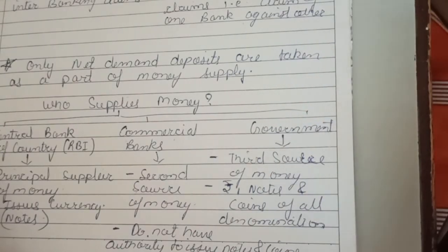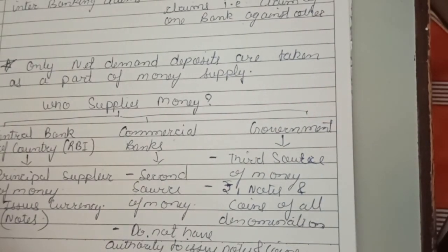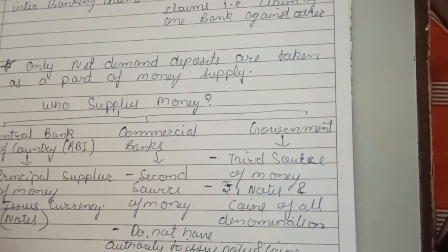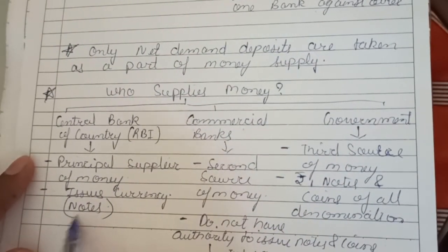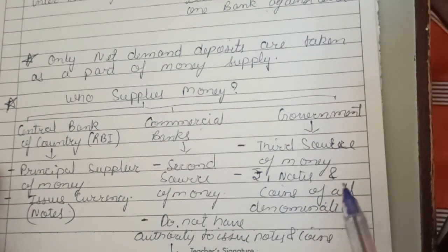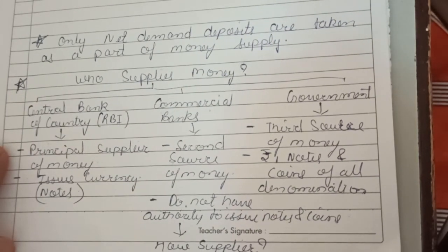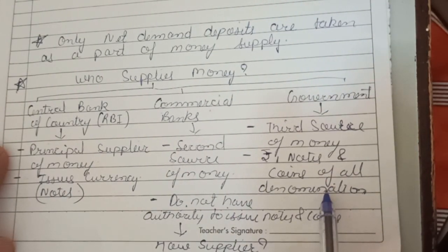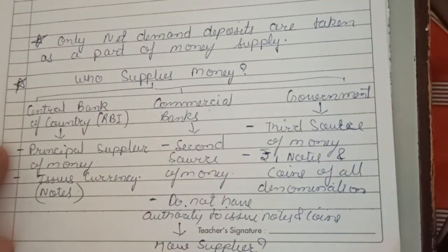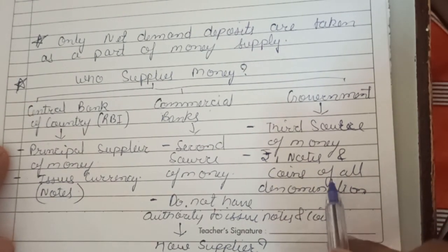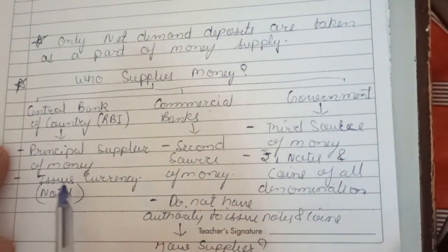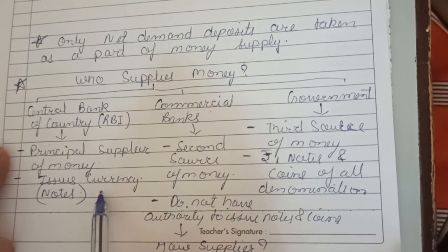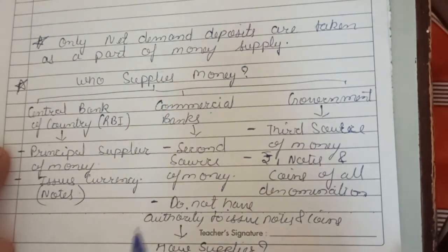The government is also a source of money. The government prints the one rupee note and mints all coins — this is under the authority of the government. RBI issues all notes except the one rupee note. So coins and the one rupee note are under the government's authority, and the government can decide how many coins to mint. Notes other than the one rupee note are issued by the central bank, RBI. That's it for today. Bye bye.